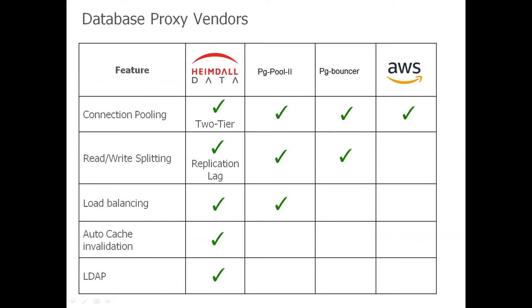Heimdall supports a two-level connection pool. There's also read-write split that we can support, and we add an extra capability of replication lag. What's notable on our proxy is we can also support automated query caching and invalidation, and LDAP — which we'll be talking about today.